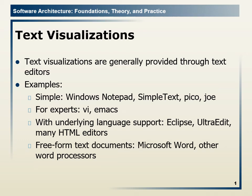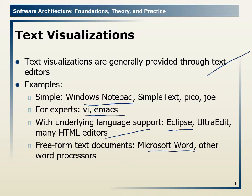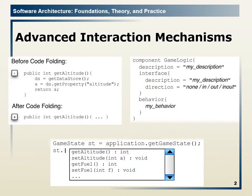Text visualization is generally provided through a text editor. Working on computers, examples include Notepad, Emacs or Vi editor with language support, Eclipse with HTML support, Microsoft Word or other word processors. They all provide text visualization support along with detection or interaction mechanisms, including advanced interaction mechanisms.